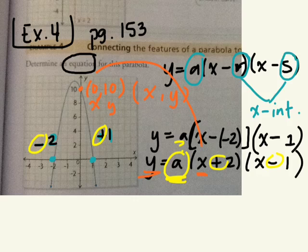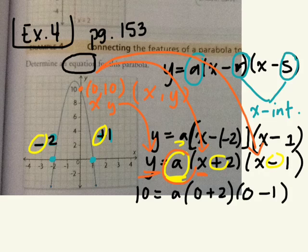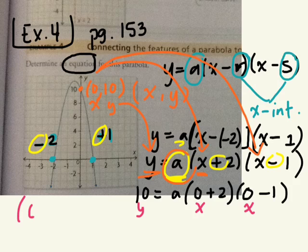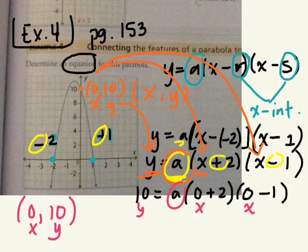So if we plug this in, if I make x 0 and y 10, can you solve for a? Because then you only have one unknown. I'm plugging in my x and my y of the coordinate that I can read, and we're going to solve for a.